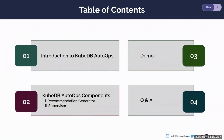Let's jump into the table of contents. First I will introduce KubeDB Auto Ops, then introduce two new components: the Recommendation Generator, which generates recommendations by inspecting DB resources, and the Supervisor, which executes those recommendations in a specific maintenance window. In the demo section I'll show how the Recommendation Generator automatically generates recommendations and how the Supervisor executes them. After that there will be a Q&A session.